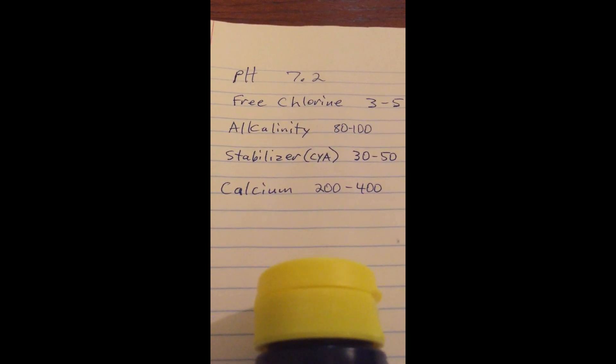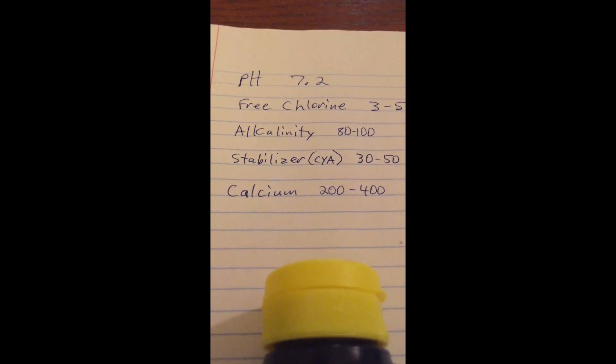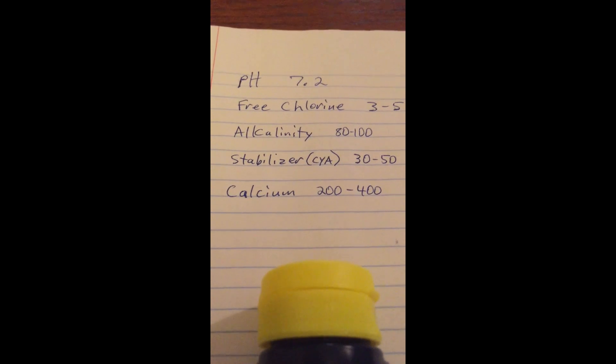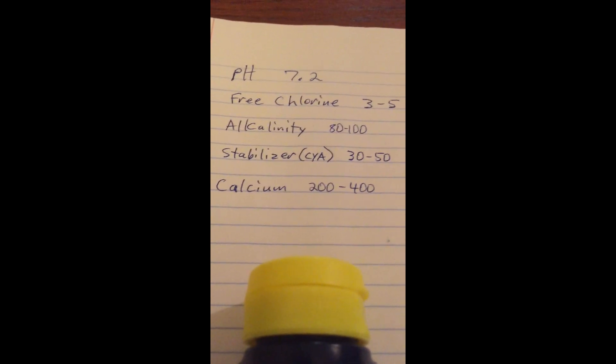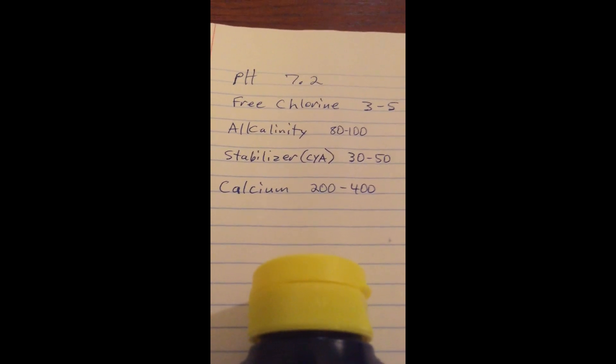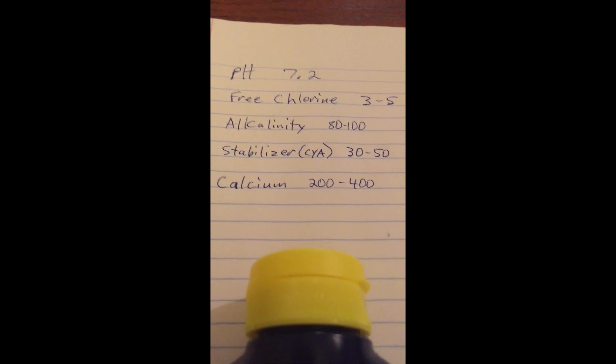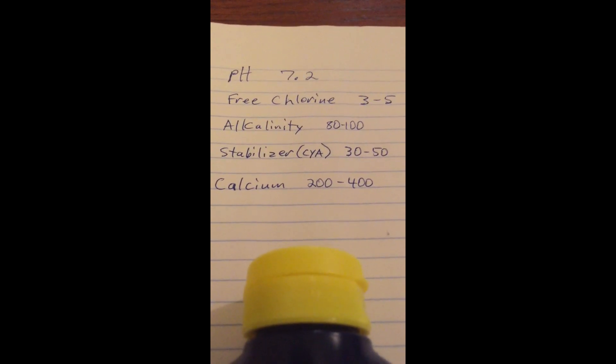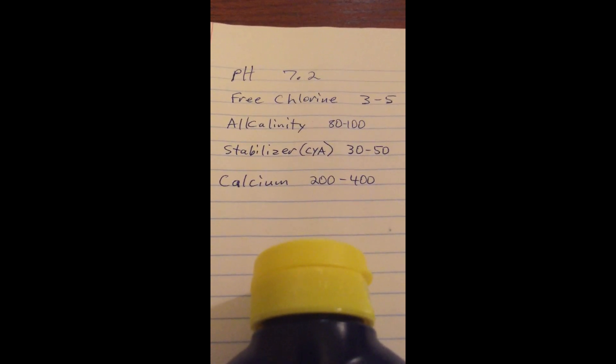I have pools right now that we care for that I took over from another company. They continue to use dichlor mixture. And so their cyanuric acid levels are like at 300. Everything's working fine. Nothing's blowing up. Nothing's happening to the cyanuric acid level. You're not experiencing chlorine lock. In my years of experience with pools, I've ever only seen one true example of chlorine lock.